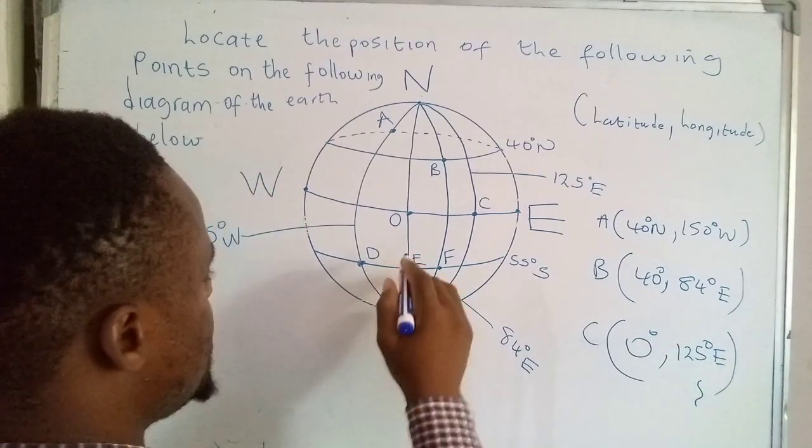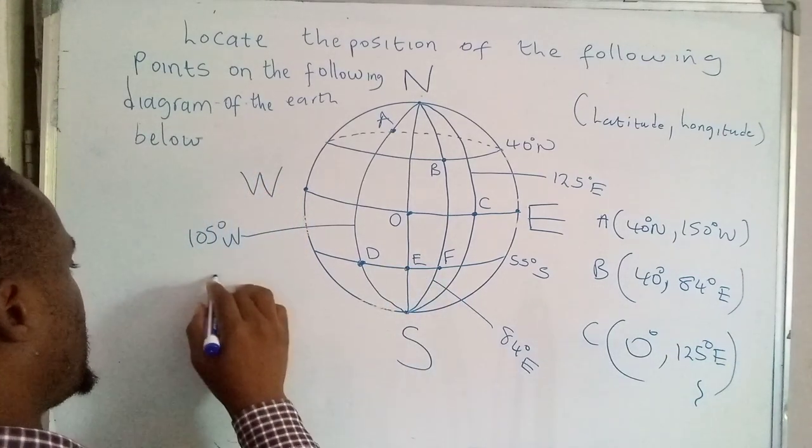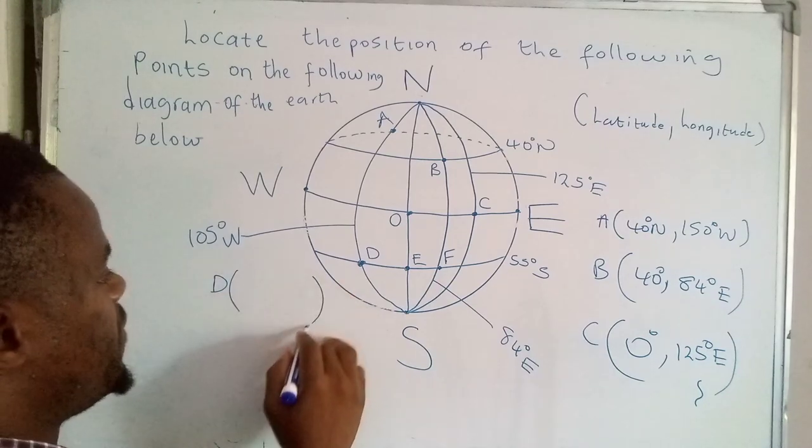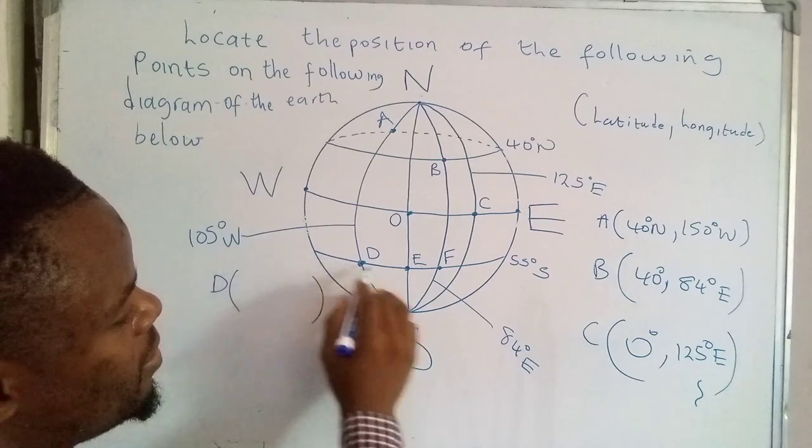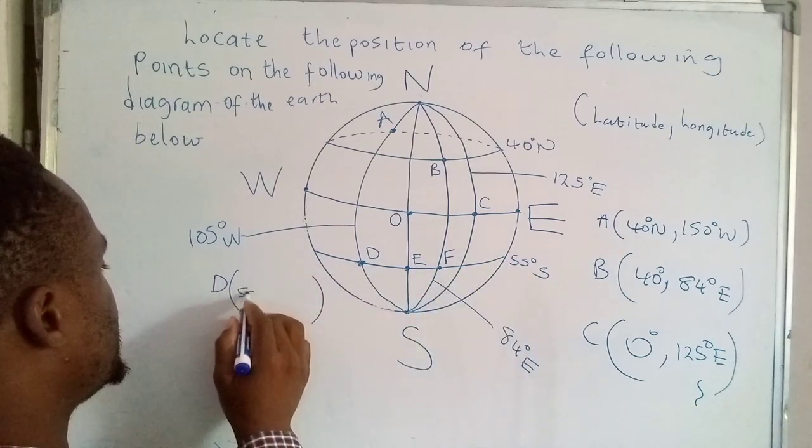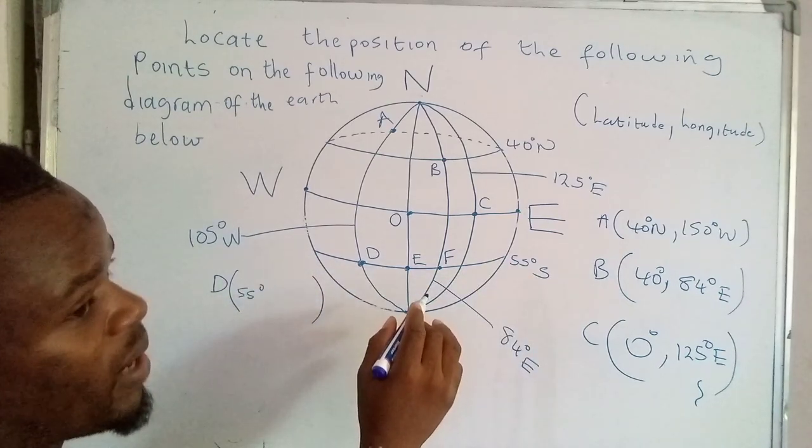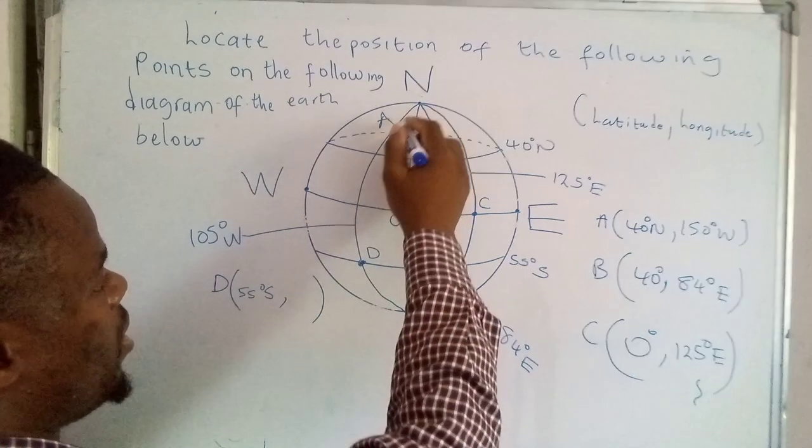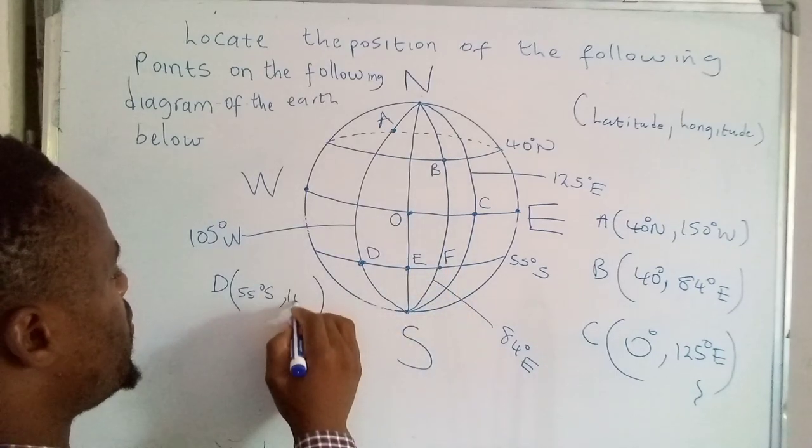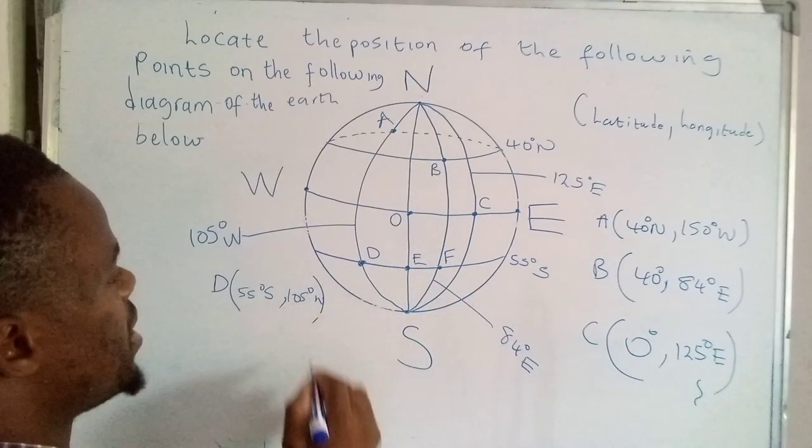So let's move on to D. D is here. What's the latitude? That's 55 degrees south. What's the longitude? Longitude is this one. That's 105 degrees west.